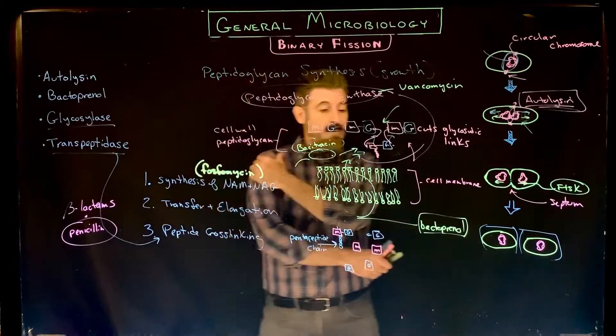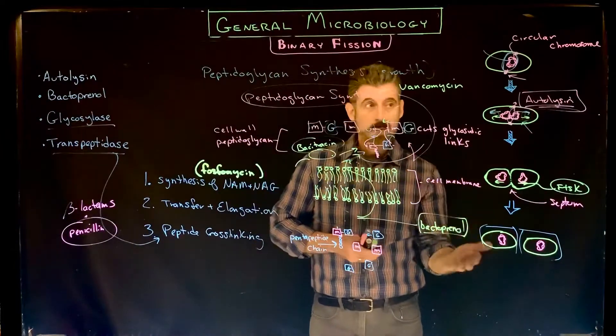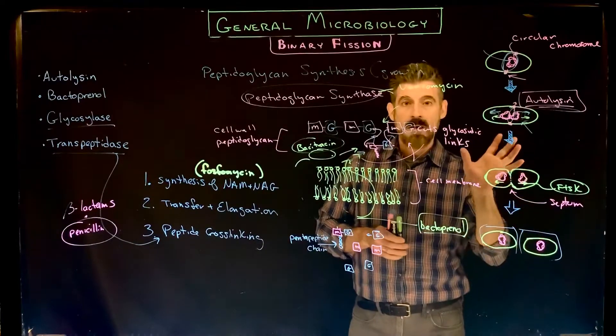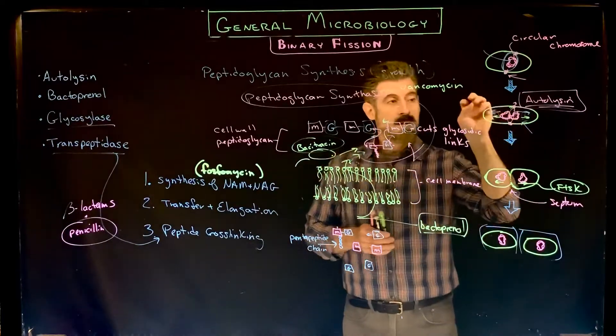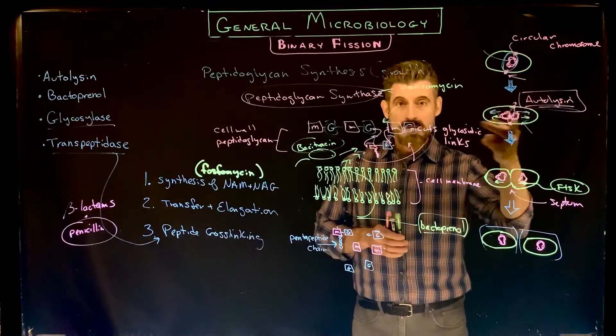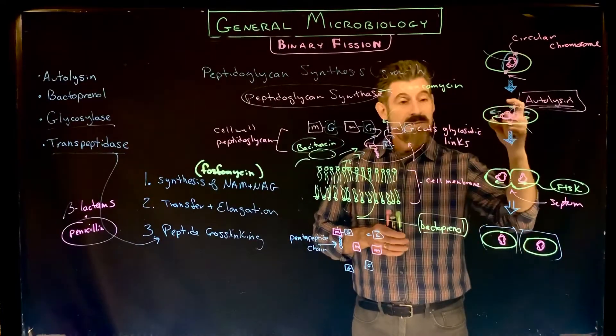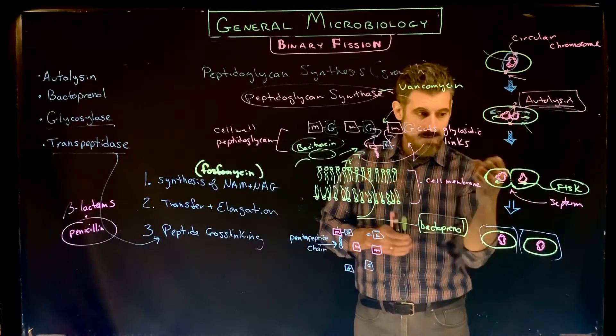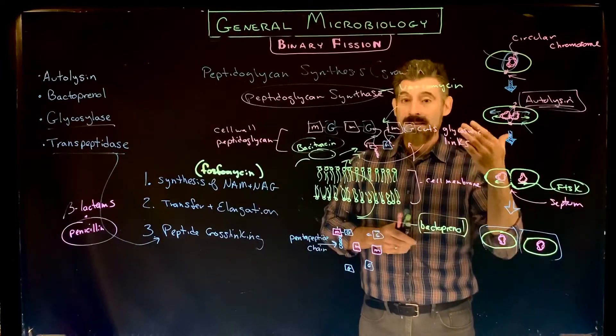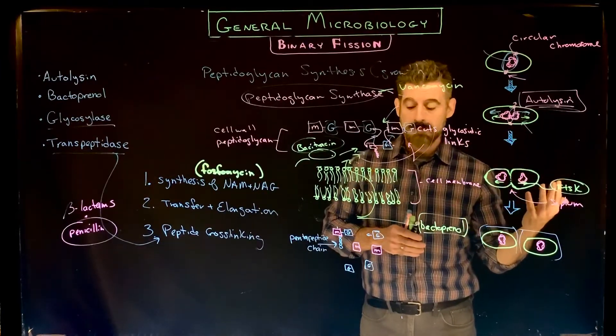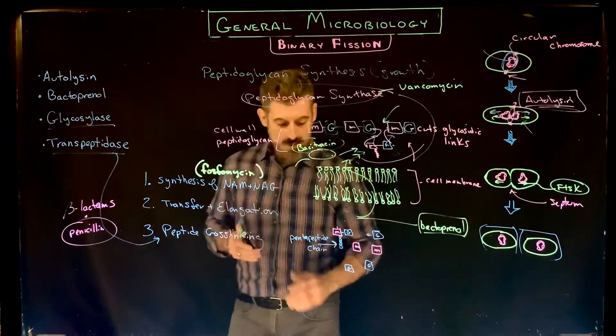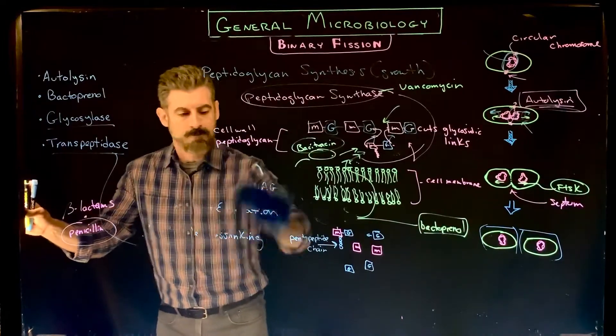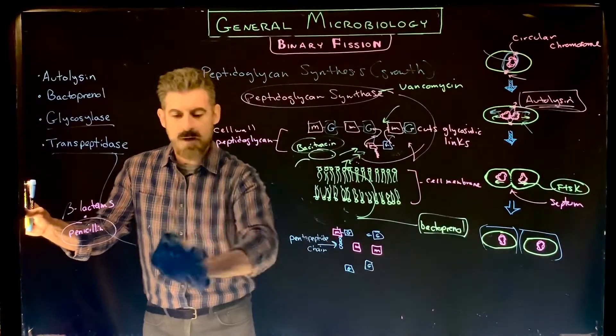In general, for the cell to divide just normally through binary fission, our replisome forms and doubles the DNA. Our divisome forms so it can divide and pull the cell membrane down and separate it into two new cells. And thirdly, we need new peptidoglycan built. That process involves all these things I just talked about and some other things as well.